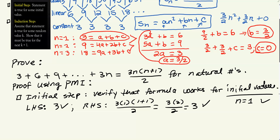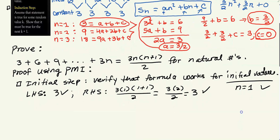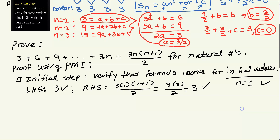The induction step is to assume that this formula works for the kth term — some arbitrary k. The concept is: if it worked for k, and the (k+1)th term also becomes true given the initial value is true, then induction says the formula is true for all n.